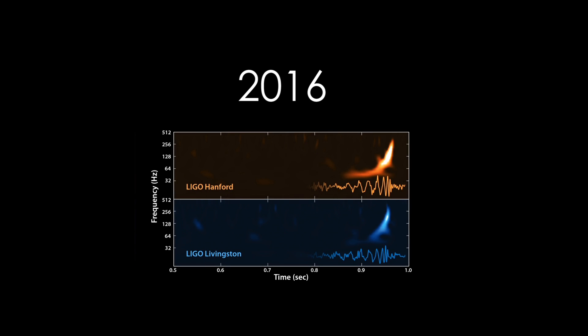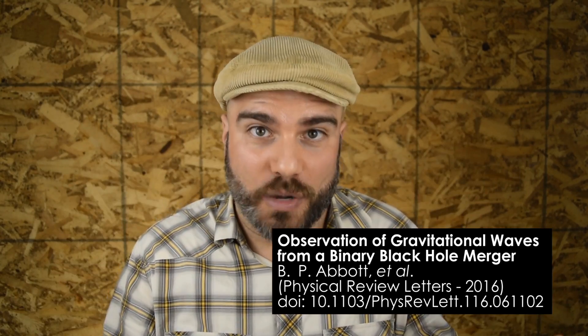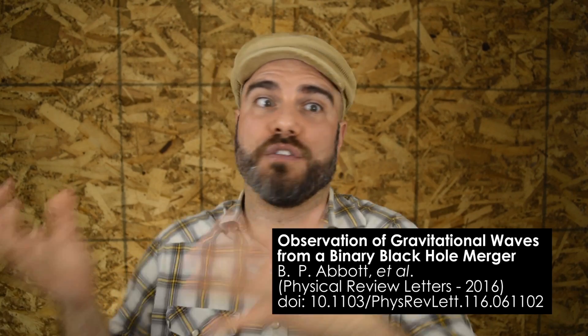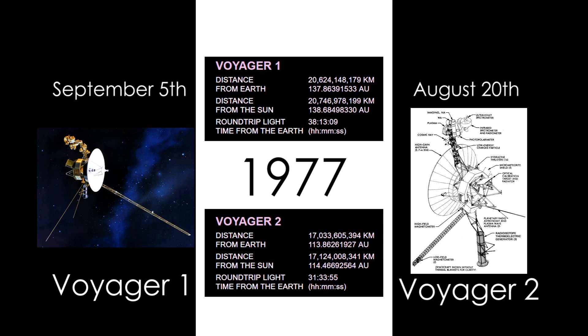In 2016, LIGO released the sound of two black holes colliding. However, that wasn't actual sound waves traveling through space to reach us from 1.3 billion light years away — it was gravitational waves, and the data collected was then converted through software into something we could hear. Sound traveling through space is simply impossible. No, it isn't. In the summer of 1977, the space probes Voyager 1 and Voyager 2 were launched into space. To this day, Voyager 1 is the farthest man-made object to have traveled away from earth, at more than 20 billion kilometers.